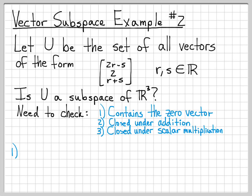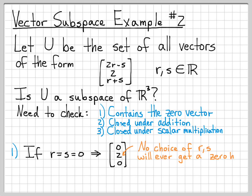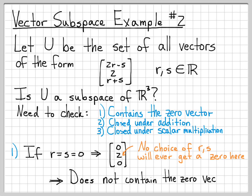Let's look at the first property: does U contain the zero vector? When r and s are equal to zero, we end up with the vector (0, 2, 0). No matter what we choose for r and s, the second coordinate is always equal to 2 — it's never zero. So there's nothing we can do to make a zero in that second coordinate, which means we can never get an all-zero vector. The set U does not contain the zero vector.